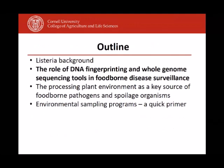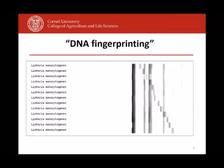Our understanding of Listeria and listeriosis has tremendously changed with the use of DNA fingerprinting tools, and specifically whole genome sequencing tools, as also witnessed in the current outbreak in South Africa. Even when we have isolates of Listeria monocytogenes obtained from foods or humans, if we apply DNA fingerprinting tools, we can find differences. We can see that one Listeria isolate is different from another — in this case using banding patterns, a common fingerprinting method used until a few years ago.